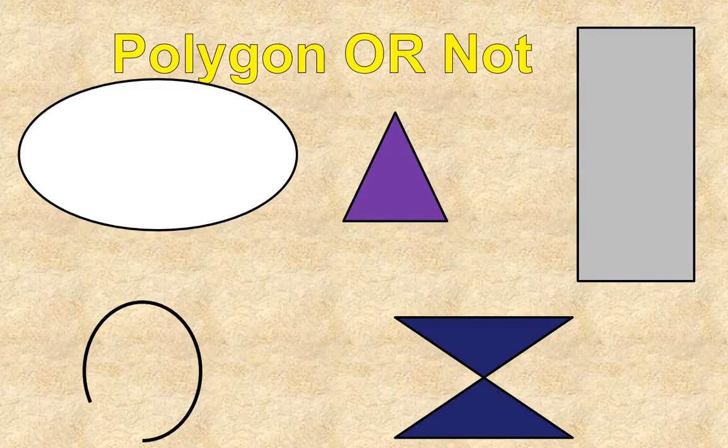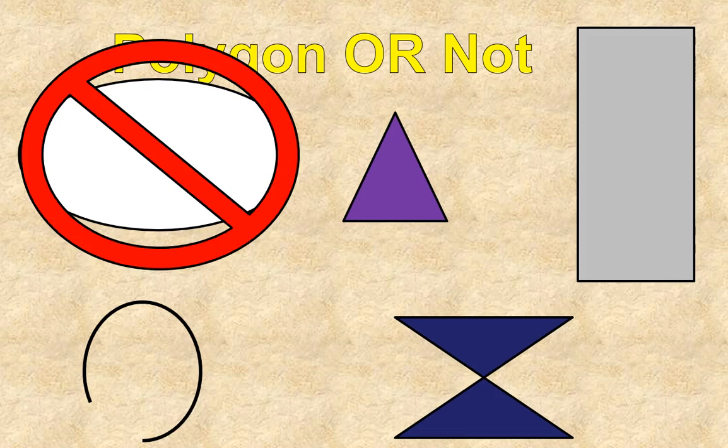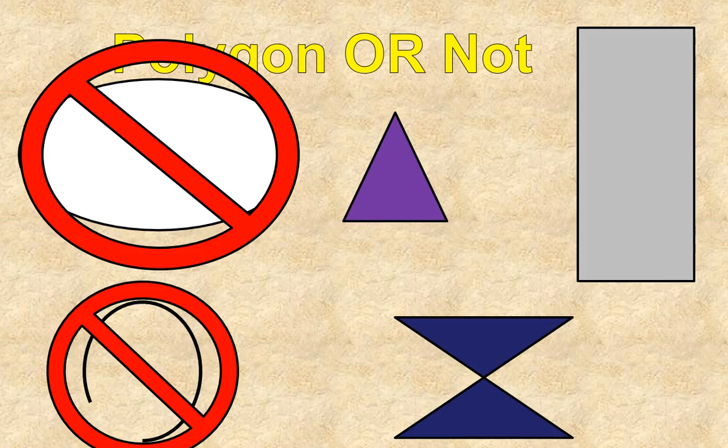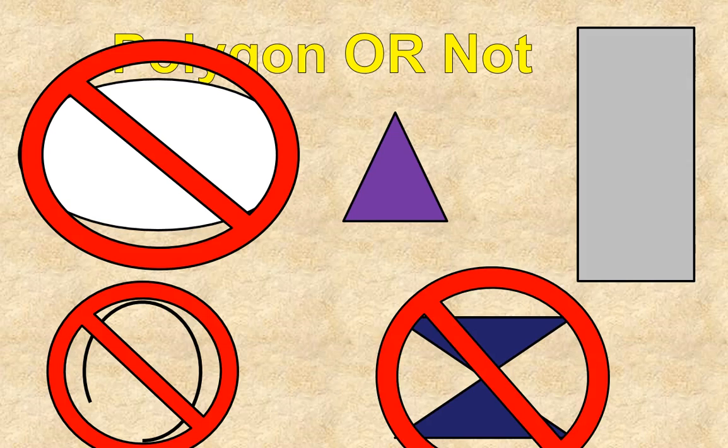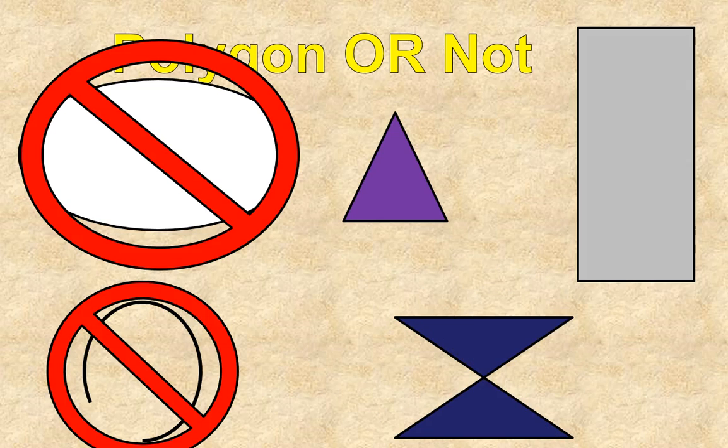First off, a quick recap from the previous lesson on what is and is not a polygon. A polygon has straight edges and no openings and no lines are crossing, so this is not a polygon, this white oval, because it has curved edges. Our second figure here on the left side is an open figure and a curved edge, so it is not a polygon, and the dark blue figure right here is not a polygon because it has crossing sides.